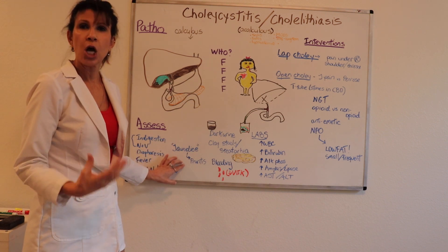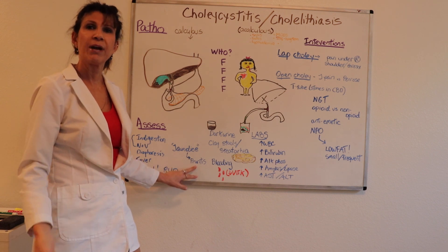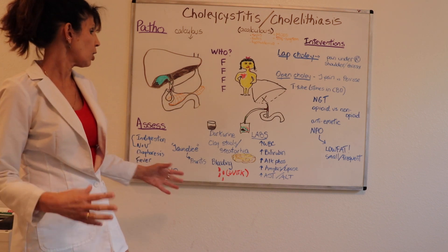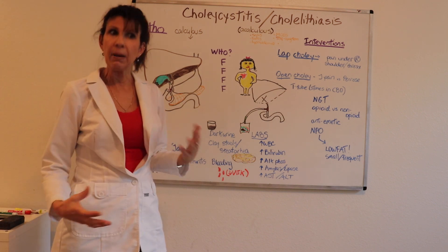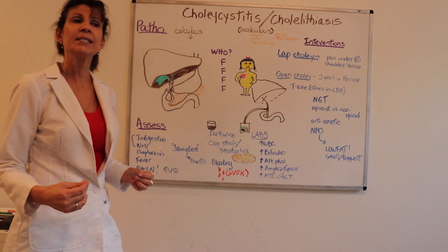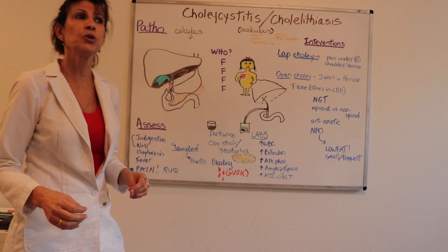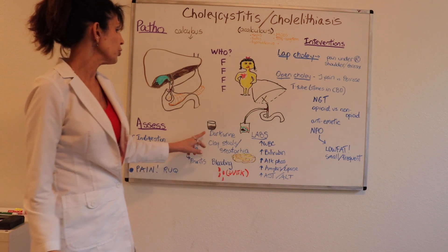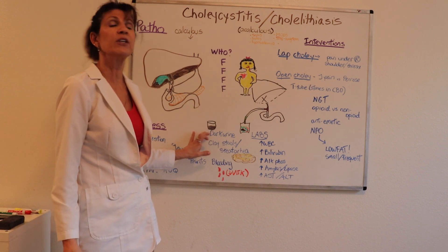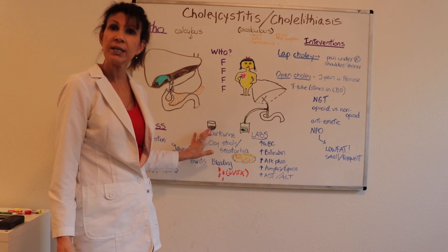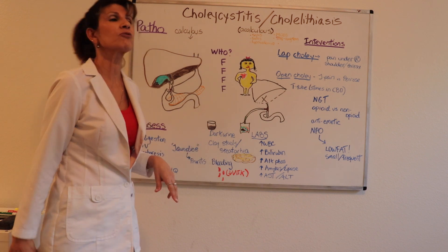Whenever you think of someone being jaundiced with bilirubin excreted, there is also pruritus that is going to be a problem. When bile and bilirubin are in the system, they pass through the renal system and pigment the urine. These patients with elevated bilirubin will have dark, tea-colored urine — also described as frothy.